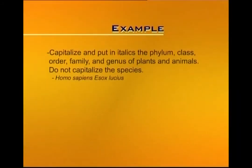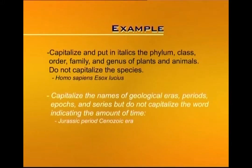You will capitalize and put in italics the phylum, class, order, family, and genus of plants and animals. Do not, however, capitalize the species. You can see that for Homo sapiens and Esox lucius, the first letter of the genus is capitalized. You will also capitalize the names of geological eras, periods, epochs, and series, but do not capitalize the word indicating the amount of time. So capitalize the J of Jurassic but not the P of period, and the C of Cenozoic but not the E of era.